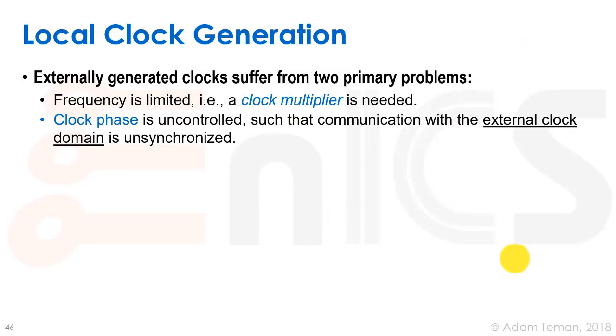There are two big problems with the externally generated clock. First, frequency is limited. If we can only bring up to say 100 megahertz and we need a one gigahertz clock, we need a clock multiplier, which is not very trivial. Second, we don't know anything about the clock phase. If we have two chips that need to talk to each other, we have a problem communicating because we have no clue about the clock phase.